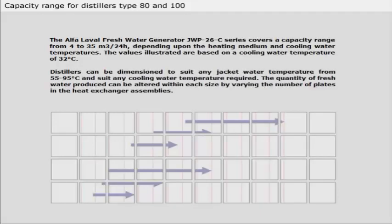Distillers can be dimensioned to suit any jacket water temperature from 55 to 95 degrees Celsius and suit any cooling water temperature required. The quantity of fresh water produced can be altered within each size by varying the number of plates in the heat exchanger assemblies.